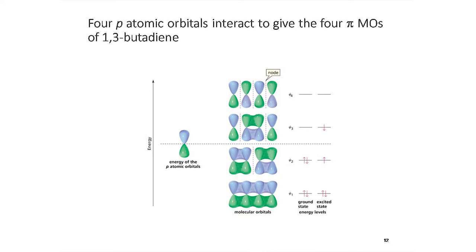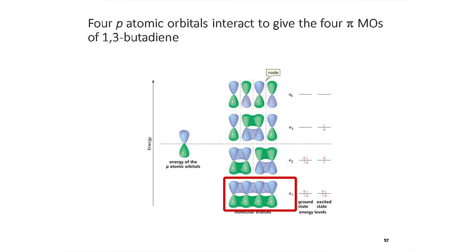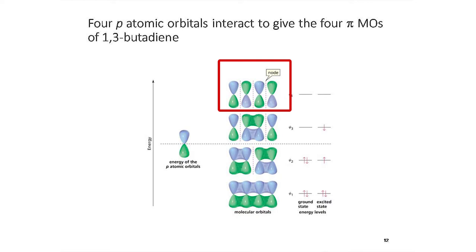The molecular orbitals of 1,3-butadiene are constructed by the linear combination of four isolated p orbitals, through bonding as well as anti-bonding interactions. There are four molecular orbitals named psi 1, psi 2, psi 3, and psi 4. In psi 1 all interactions are bonding and there are no nodes, whereas in psi 4 all interactions are anti-bonding, giving three nodes. Energy increases from psi 1 to psi 4; psi 1 has the least energy and psi 4 has the highest.